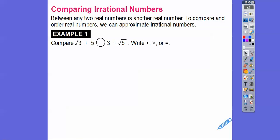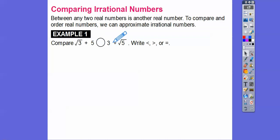Here it says compare √3 + 5 with 3 + √5, using less than, greater than, or equals. Notice this one has the square root on the 3, whereas over here this one has the square root on the 5. So let's estimate the square root of 3 and the square root of 5.